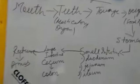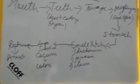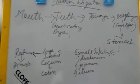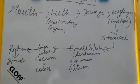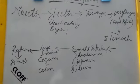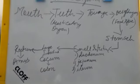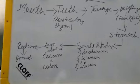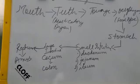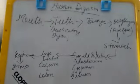As you can see on the board, the human digestive system starts from the mouth, then the teeth (also known as the masticatory organ), tongue, esophagus, stomach, small intestine, large intestine, rectum, and anus. These are the basic points where food passes through during digestion.